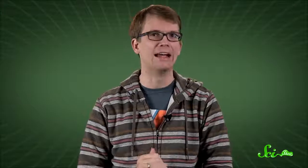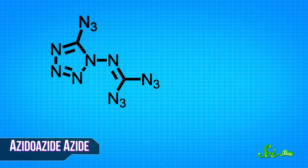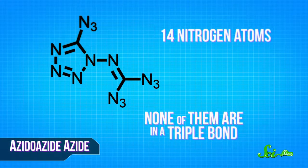So if you look at a molecule of AA, we're going to call it AA, because azidoazide azide, it's hard. You can see how it gets its bang. It has 14 nitrogen atoms, and because of the way the molecule is structured, none of them are in a triple bond. Instead, they're stuck in a loosely bound, high-energy state, and are dying to move to a more stable, lower-energy state, which means releasing a lot of pent-up energy in the process.